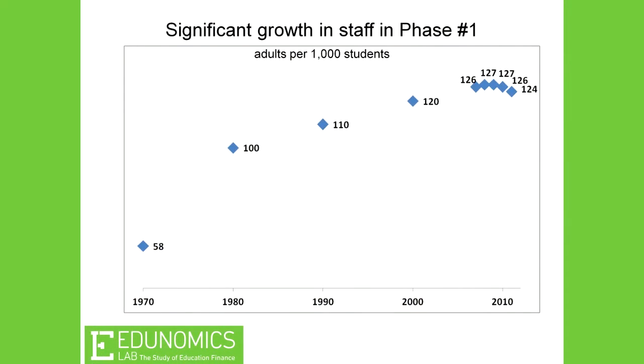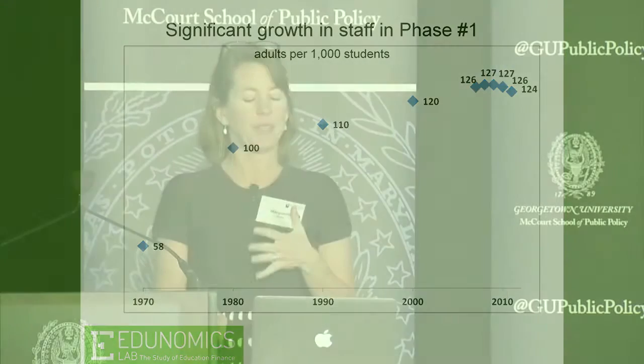These are overlapping phases, but we did get quite a bit more for that money. Back in 1970, there were 58 full-time equivalent adults in public schools for every 1,000 students. That grew to 100 by 1980, and it grew again — though not at the same pace as those early decades. And as we got toward the end of the leveling up phase, people started asking about the money.